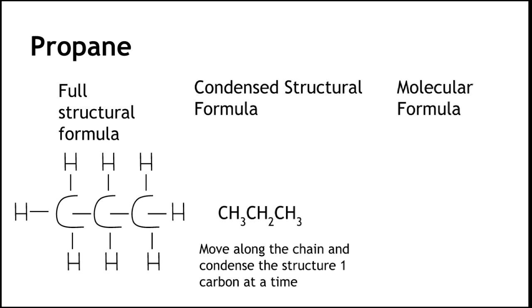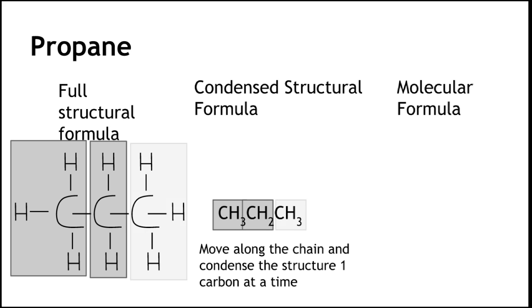So we go along the chain from left to right, indicating what atoms are attached. The first carbon atom has got three hydrogen atoms, CH3. The second carbon atom has got two hydrogen atoms attached, CH2. And the last carbon atom has got three hydrogen atoms attached, CH3.